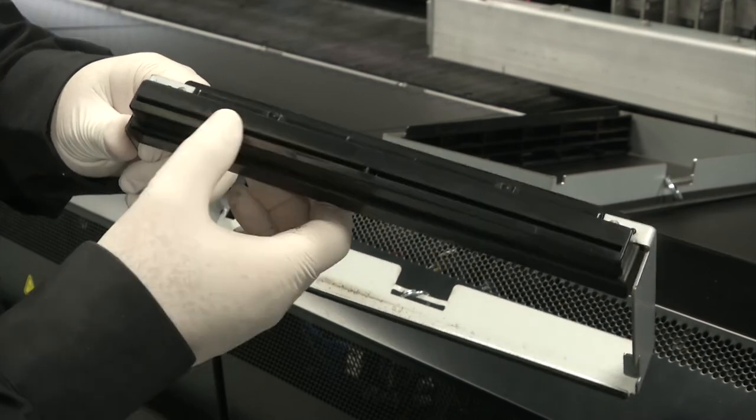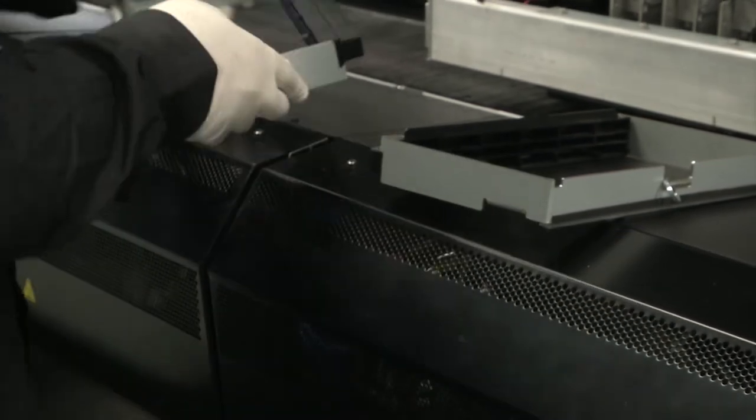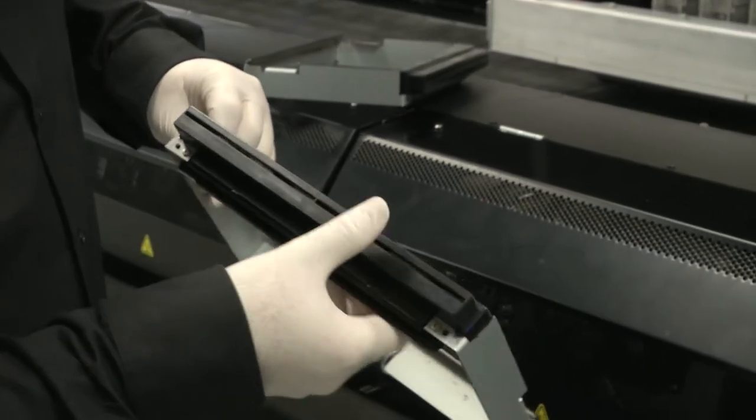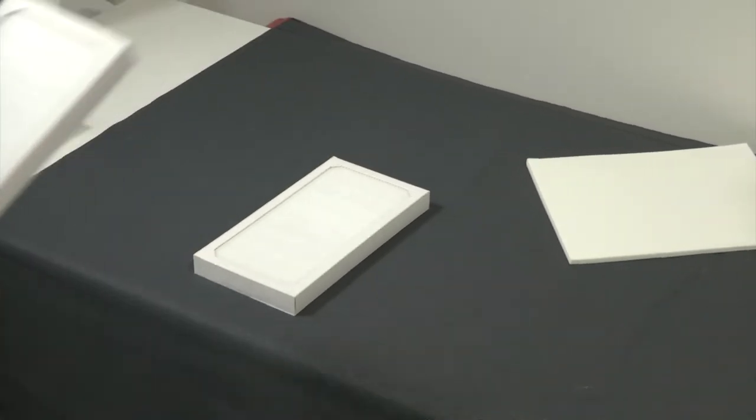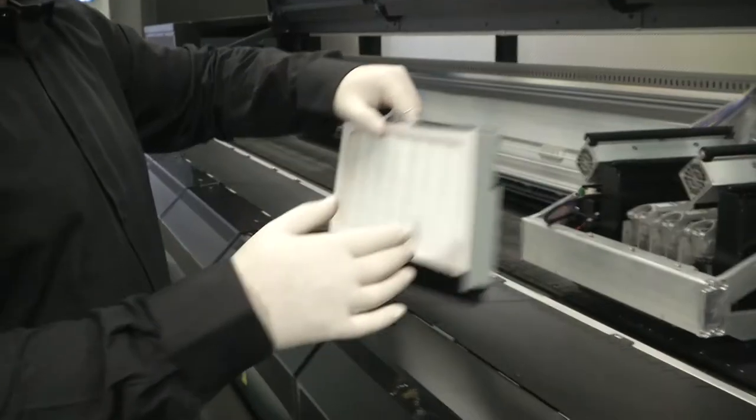Clean the frame nozzle with the maintenance kit brush. Grab one of the new filters provided with the kit. Place the new filter on its frame and each frame in the corresponding module.